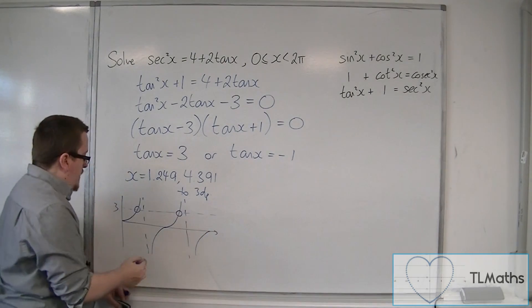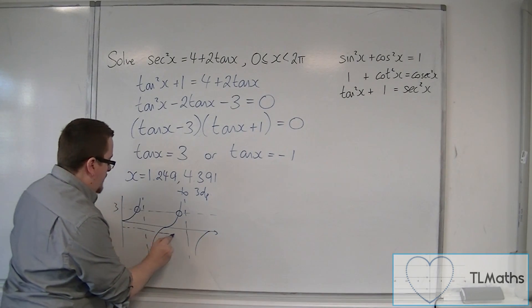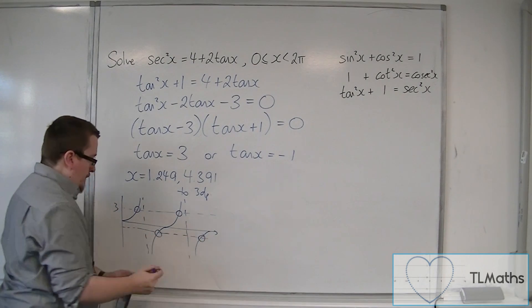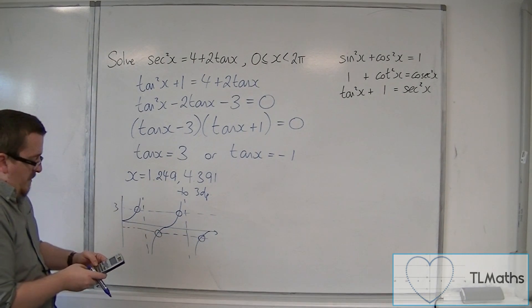We also need to solve tan x is equal to minus 1. Minus 1 would be down here. So we've got two solutions to get for that one. So inverse tan of minus 1.